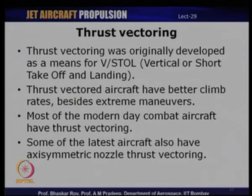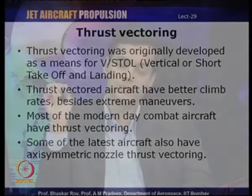Thrust vectoring provides exceptional agility and maneuvering capabilities — one of the important aspects of modern day combat aircraft. It was originally developed for achieving vertical or short takeoff and landing and is still used in some aircraft like the Sea Harrier, which has more or less a vertical takeoff and landing where the nozzles can be deflected in extreme directions. Thrust vectored aircraft obviously will have better maneuvering capabilities and can also have better climb rates. This feature is now used in most modern day combat aircraft, and some also have axisymmetric nozzles which can be vectored.